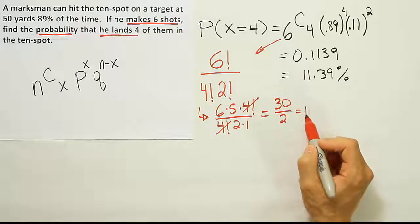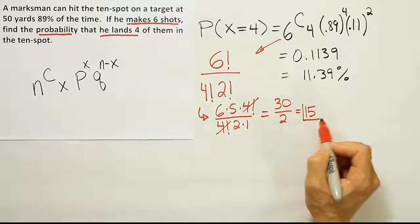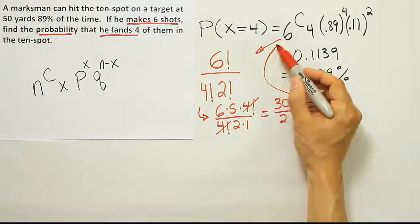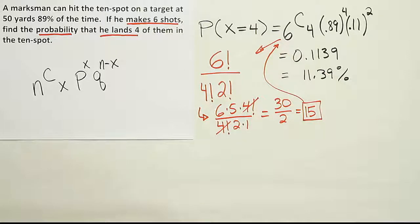Divided by 2, and that, of course, is 15. So your final answer then is 15. That's the number out here in front. And then once you have 15, you just multiply 15 by those quantities, and you'll end up with the same answer.